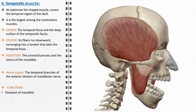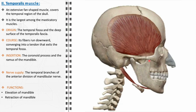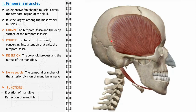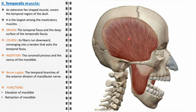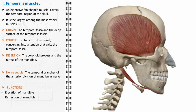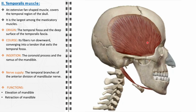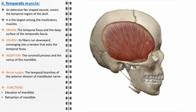The temporalis muscle primarily elevates the mandible, facilitating biting and chewing actions. Its role in retracting the mandible is also essential for complex masticatory movements. Clinically, disorders affecting this muscle, such as myalgia or muscle spasms, can lead to temporomandibular joint disorders, causing pain and functional impairment. It is also involved in tension-type headaches due to stress exerted during prolonged mastication or clenching. Variations in its size and strength can affect facial contours, contributing to individual differences in facial aesthetics.